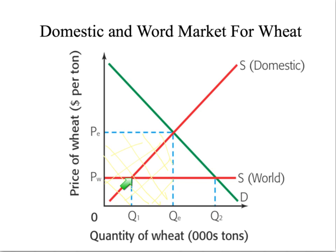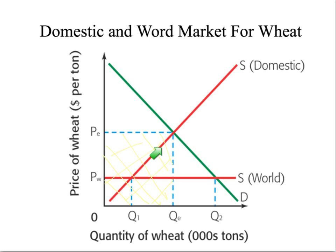As a result of the drop in price, there's going to be a dramatic increase in the number of consumers willing to purchase wheat at a price level of PW. While this is a big gain for U.S. consumers, the drop in price is going to push all of these suppliers — represented by this section of the supply curve — out of the marketplace because it's not efficient for them.